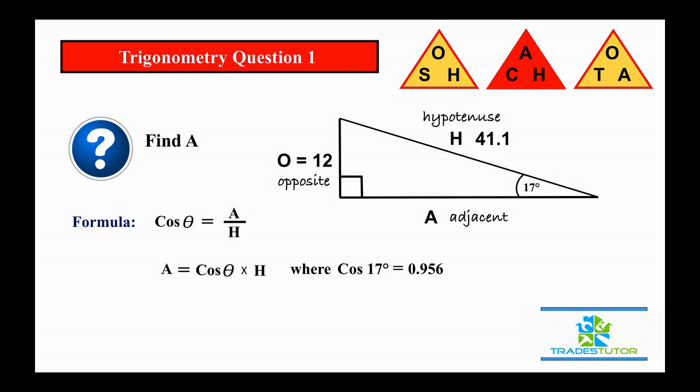So once again, the idea here is the adjacent is 95.6% as big as the hypotenuse. So essentially, it's going to be a little bit smaller. And sure enough, turns out to be 39.29.